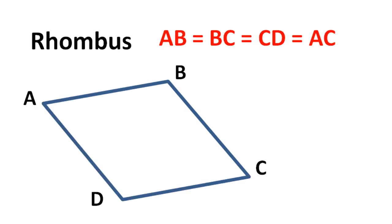The next figure is a rhombus, in which the sides are all equal to each other. So a rhombus is a parallelogram in which all the sides are equal.